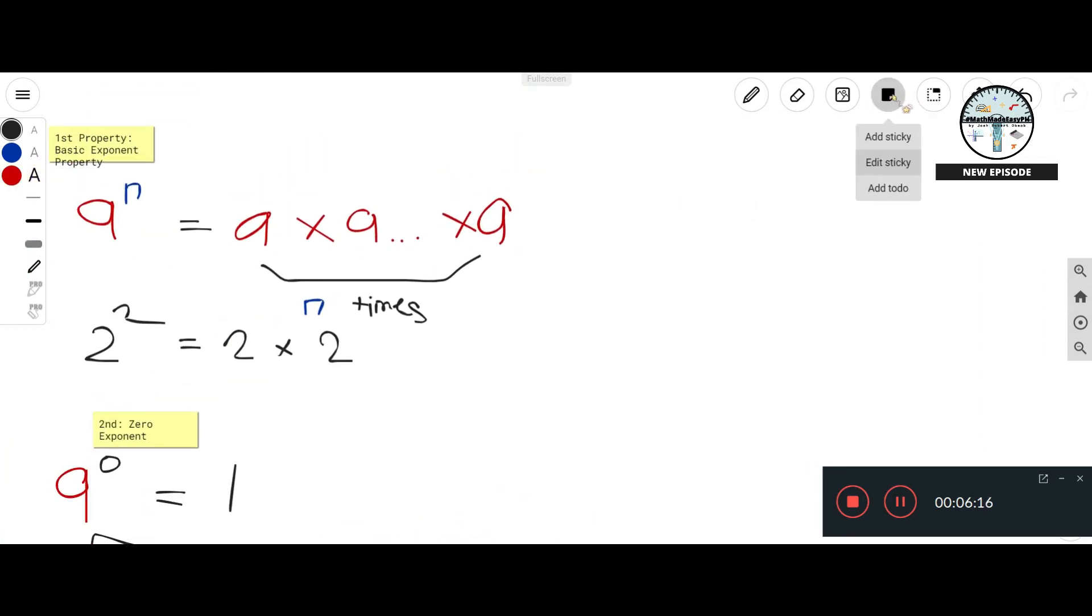So the last property for now is the negative exponent property. So for every number with a negative exponent, that is just equal to—I'm gonna write it first. Let's say a raised to negative n, that is just equal to a fraction like this. Then I will just copy this, then remove the negative sign. And that's it, that is the negative exponent property.